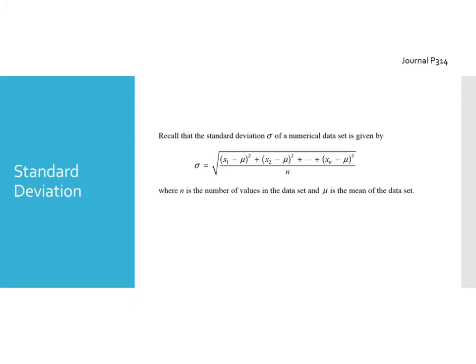First we need to do a quick recap of standard deviation. They changed notations on us a little bit — they are now using mu (μ) in place of x-bar, but they mean the exact same thing. This lowercase sigma (σ) is our symbol for standard deviation. To find standard deviation: find the mean, subtract the mean from each number, square them, add them all together, divide by how many numbers you had, and square root it. Standard deviation tells you on average how far your data points are from the mean. This formula can be found on page 314 of your journal — put a big star by it.